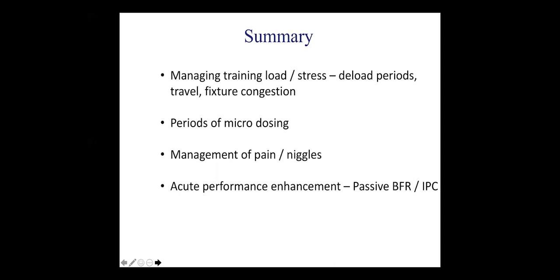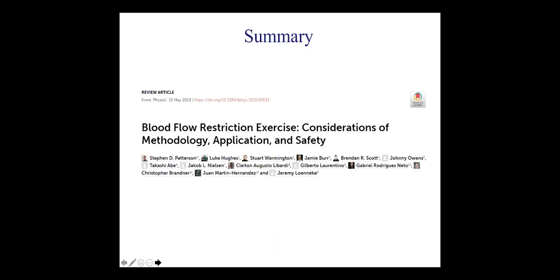There is also some evidence that we can enhance acute performance with passive blood flow restriction and ischemic preconditioning. And finally, this can possibly help with recovery following strenuous exercise — for example, using it immediately after training or letting athletes take the cuffs home with them, whether in hotel rooms or wherever, allowing application of this recovery modality while at rest. For further guidance on how to apply blood flow restriction and its safety, we've put together an article bringing together experts from all over the world to reach consensus on how to apply BFR, including programming guidelines for the different modalities discussed today.